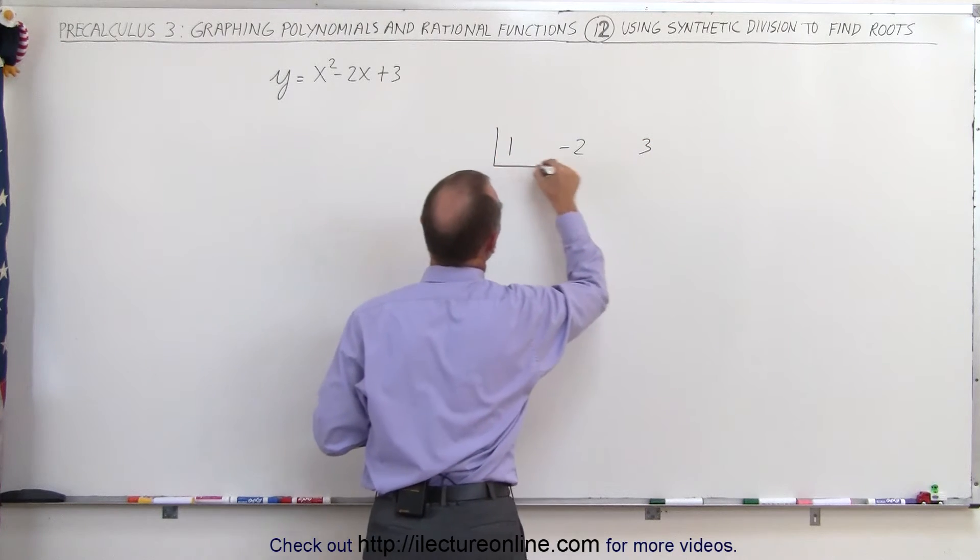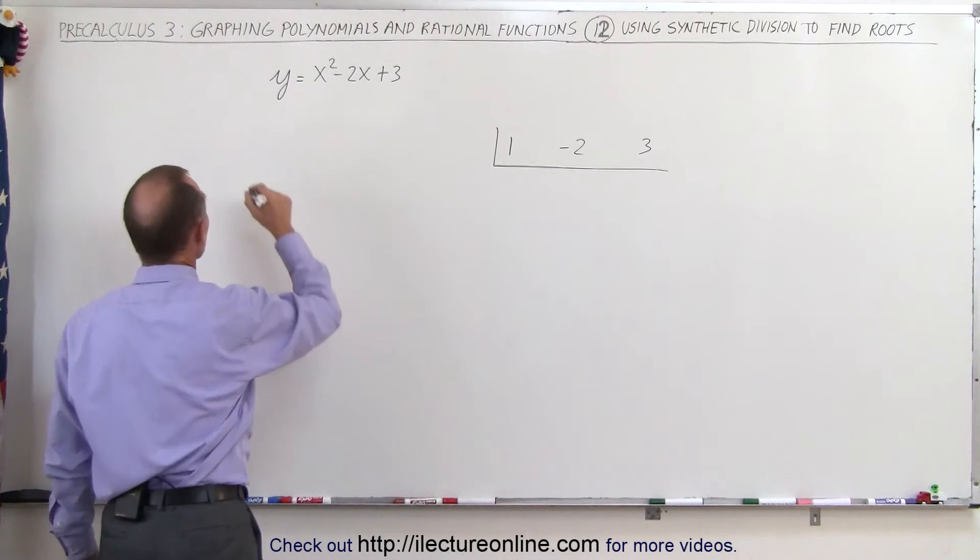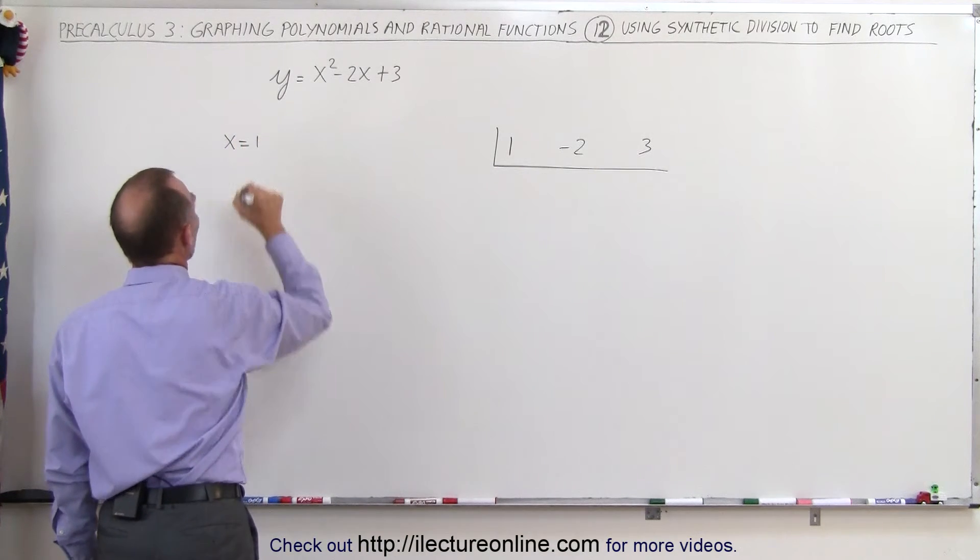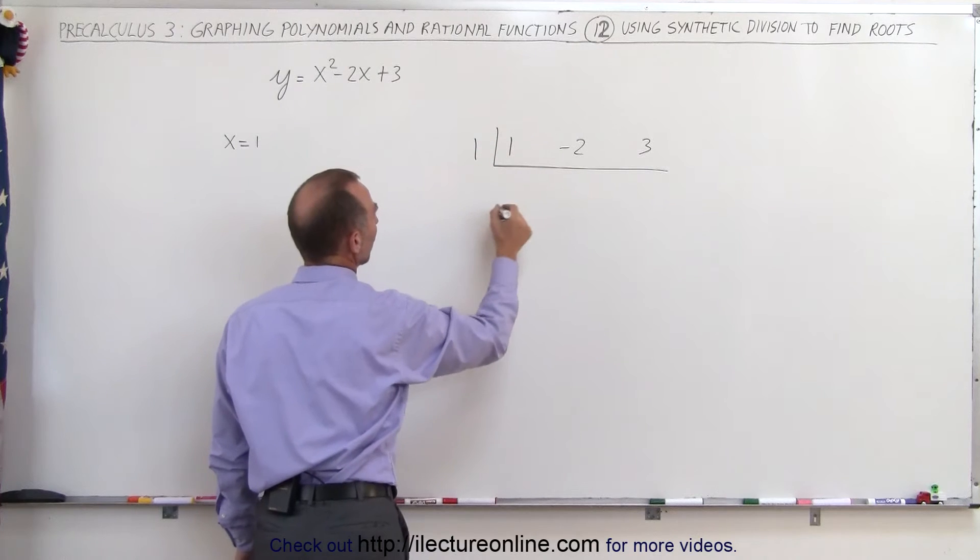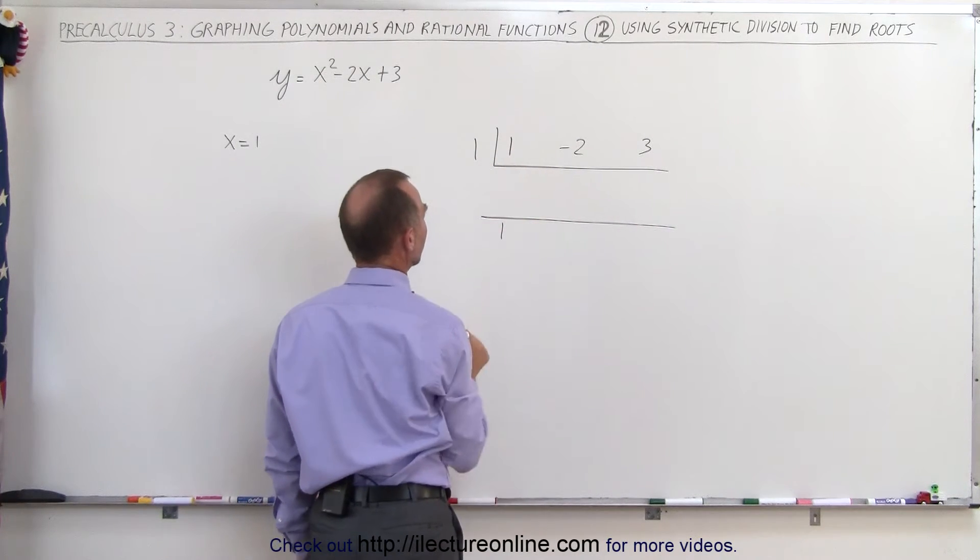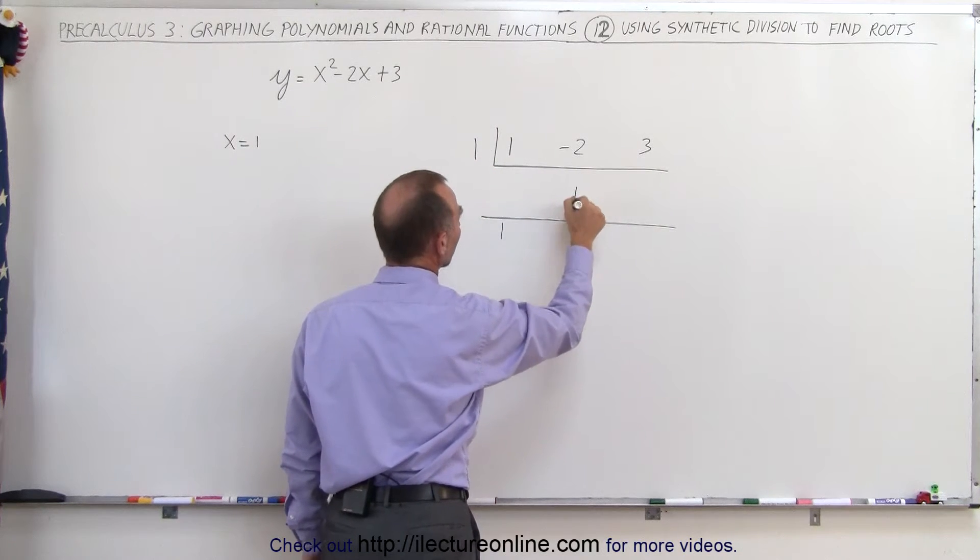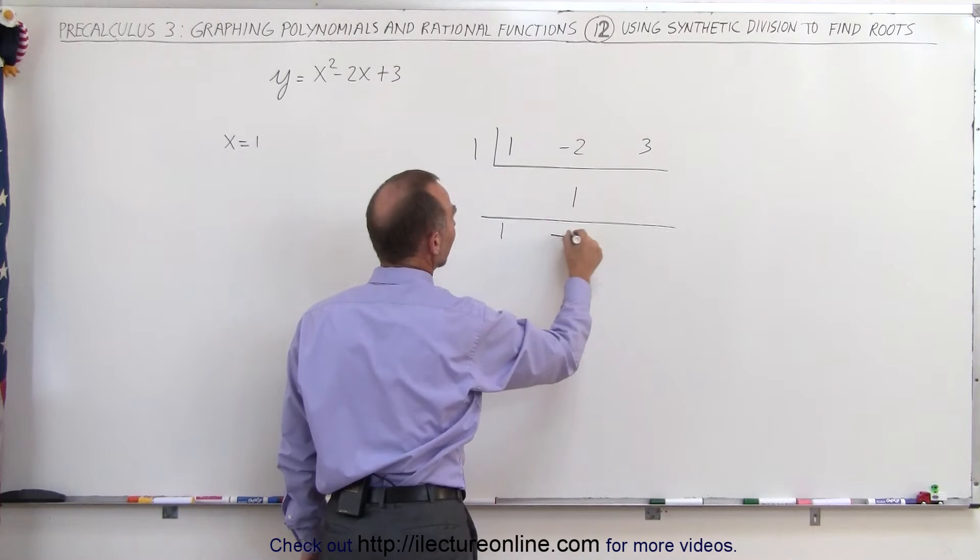We draw two lines like this, and now we're going to try some roots. So let's say the first root we try where x is equal to 1. So we place 1 there, we place another line down here, and then we drop this 1 down over here. And now we multiply 1 times 1 and place it over there.